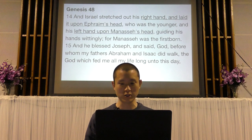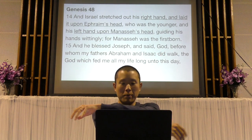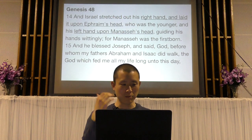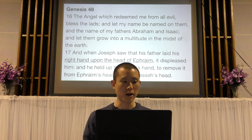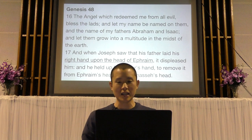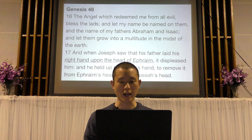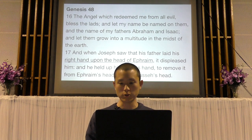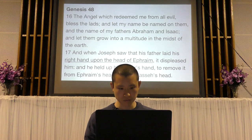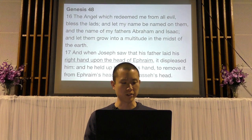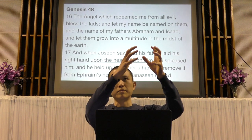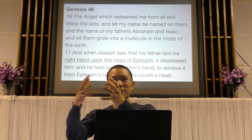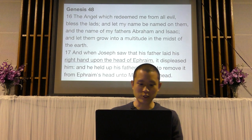He blessed Joseph and said, "God before whom my fathers Abraham and Isaac did walk, the God which fed me all my life long unto this day — the angel which redeemed me from all evil — bless the lads. Let my name be named on them, and the name of my fathers Abraham and Isaac, and let them grow into a multitude in the midst of the earth." This is the passing on of the blessing of Abraham, just as Isaac had done when he blessed Jacob instead of Esau.